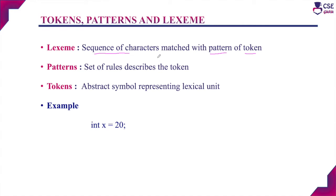For example, if a lexeme is identified and it matches with the reserved words present in the list, the pattern will recognize that lexeme as a keyword. Suppose the lexeme matches with an identifier, then the pattern will recognize that lexeme as a token name identifier. Token is nothing but an abstract symbol representing the lexical unit.